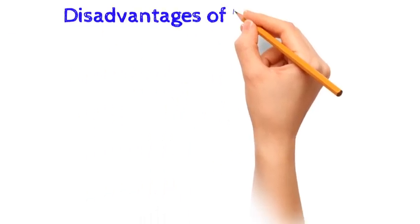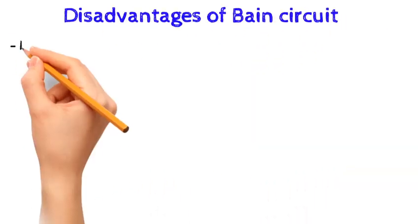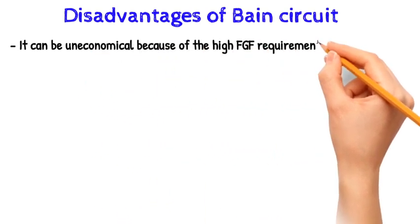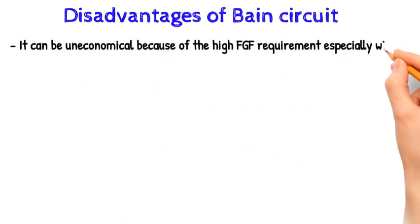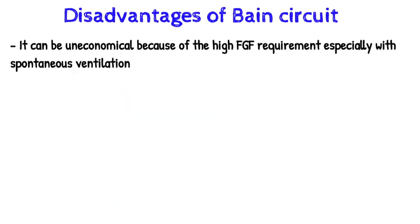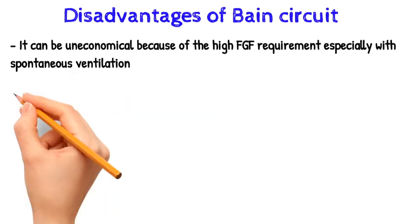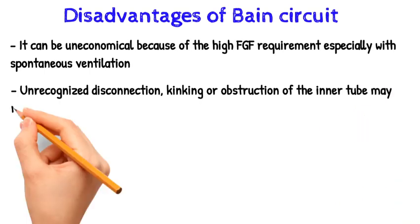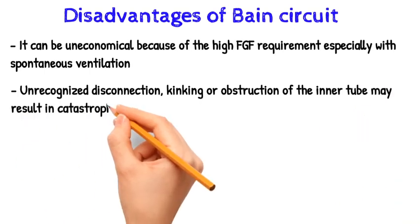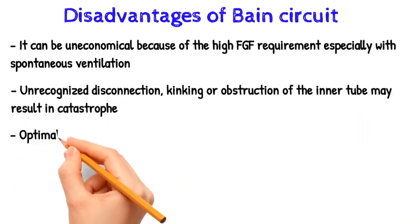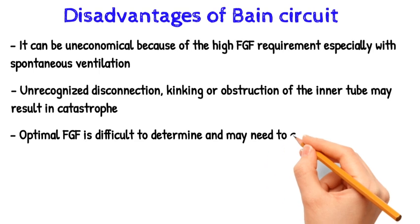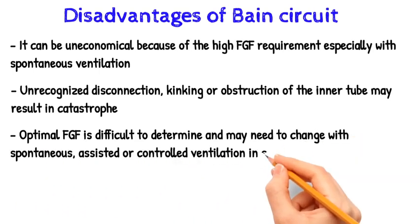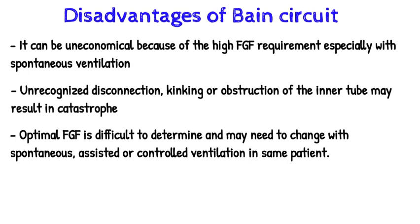Disadvantages of the Bain circuit: it can be uneconomical because of the high fresh gas flow requirement, especially with spontaneous ventilation. Unrecognized disconnection, kinking, or obstruction of the inner tube may result in catastrophe. Optimal fresh gas flow is difficult to determine and may need to change with spontaneous, assisted, or controlled ventilation in the same patient.